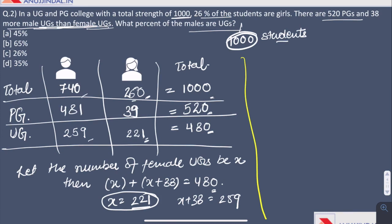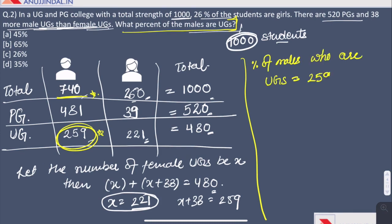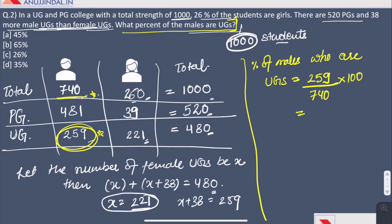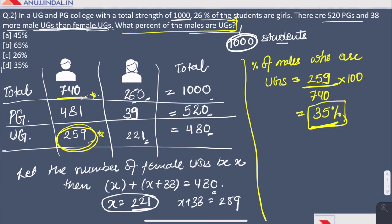Now the question asks about what percent of males are UGs. So 259 males are in the UGs and there are total 740 males in the college. Percentage is 259 divided by 740 into 100 which gives us 35%. Answer is D. Whenever you're given a lot of data in questions, just don't forget to make such tables as they simplify the question.